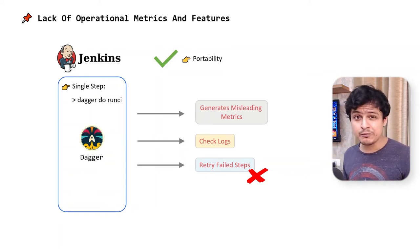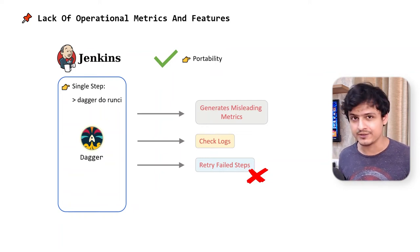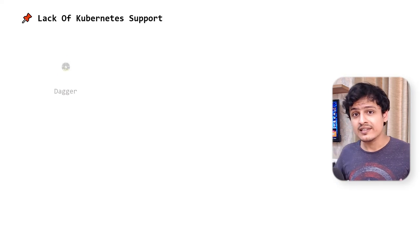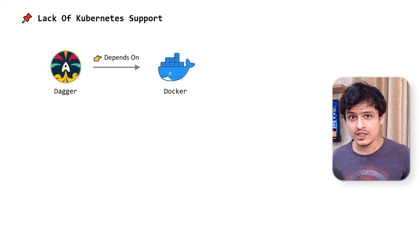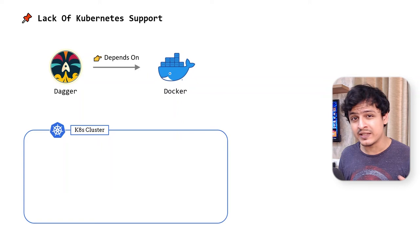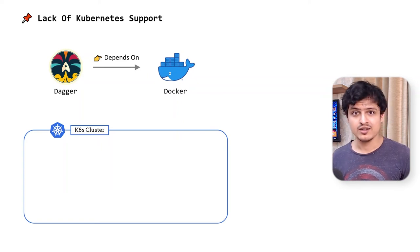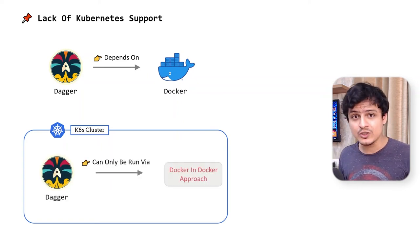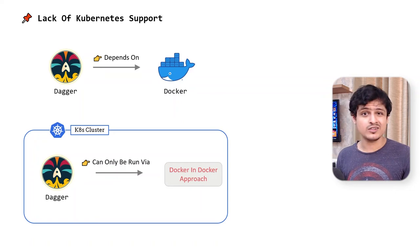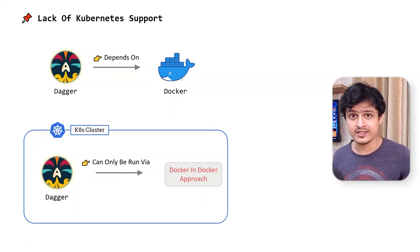This could be a real deal breaker for those looking for a more out-of-the-box solution. Last but not least, Dagger works only with Docker. So if you prefer running your pipelines in Kubernetes, you're out of luck. I mean, you can run Dagger in Kubernetes, but it's via the Docker-in-Docker approach, which isn't ideal.